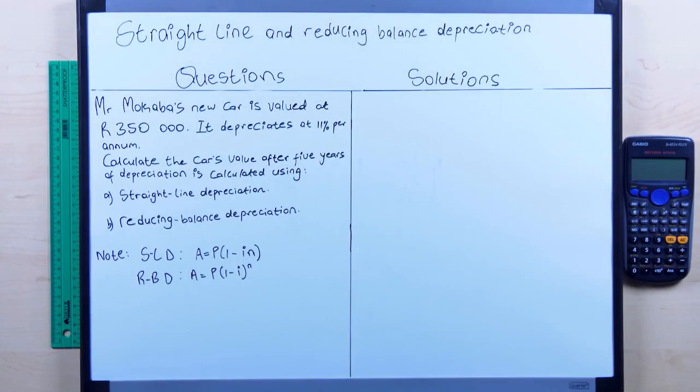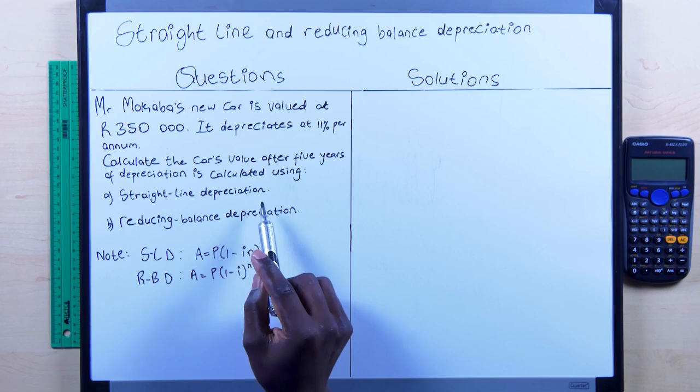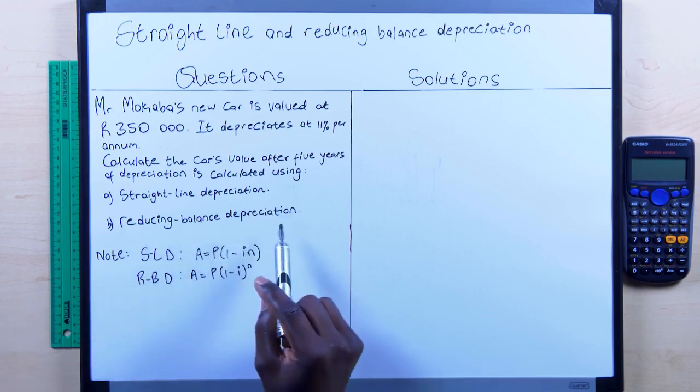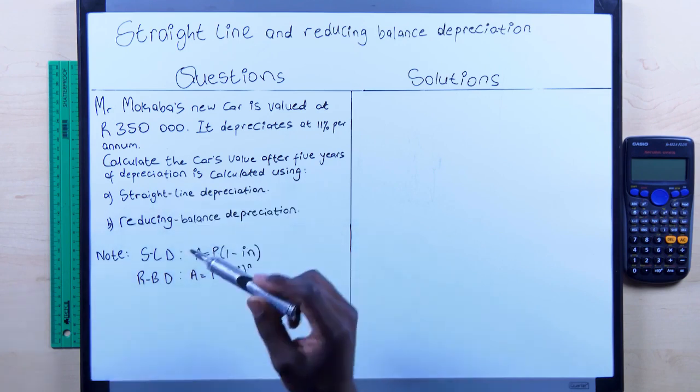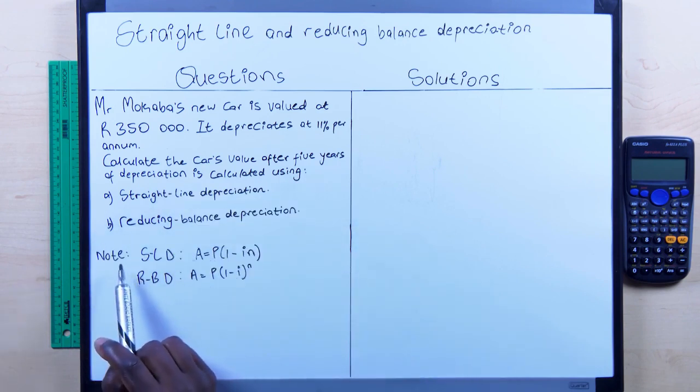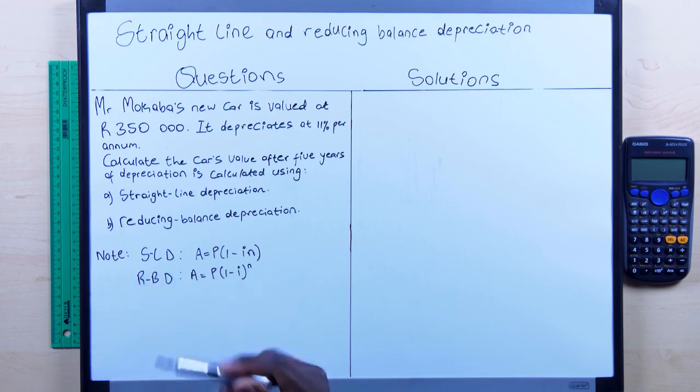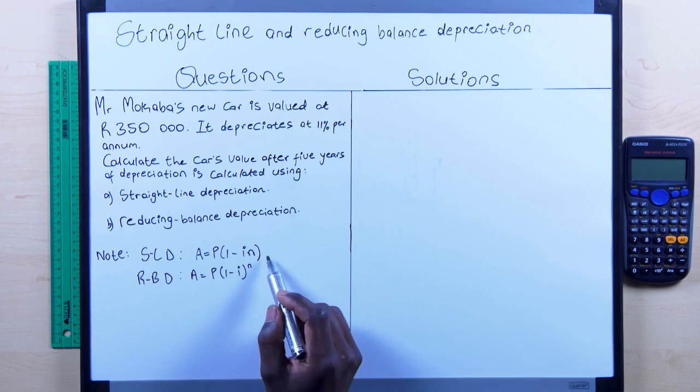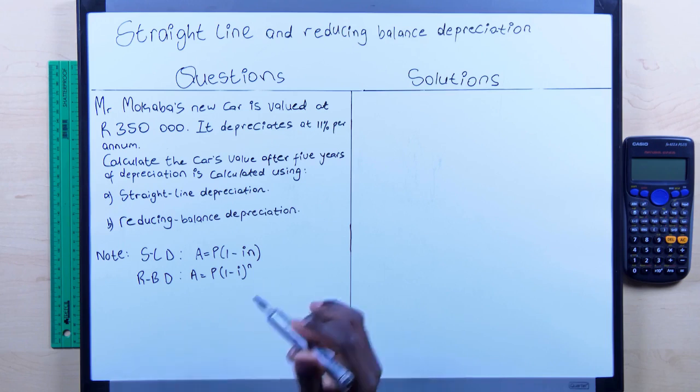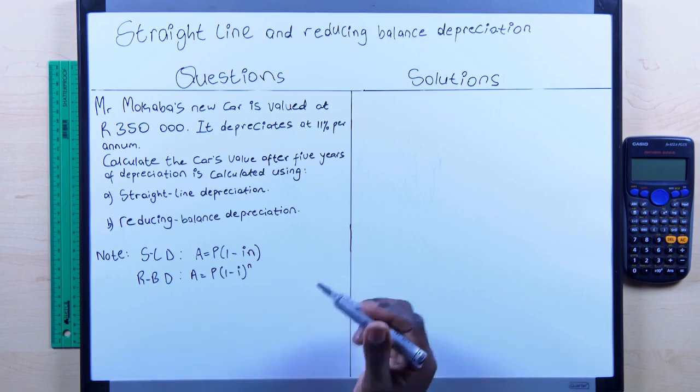Mr. Mukaba's new car is valued at R350,000. It depreciates at 11% per annum. Calculate the car's value after 5 years of depreciation is calculated using 1. Straight Line Depreciation 2. Reducing Balance Depreciation. So, we're going to use either this and that based on the question. The question, first of all, wants us to use Straight Line Depreciation. Now, there is a way of understanding this and they normally say it is a simple interest formula with just a negative sign. That's not really entirely correct, but you can, to understand it, you can just use that sort of mentality or mindset.